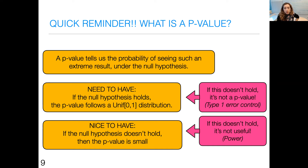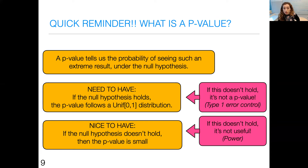A brief note: if you think you'd avoid this problem by reporting confidence intervals instead of p-values, you're wrong — the same issues apply. And if you're a Bayesian, you're still not getting out of this problem. This is a fundamental issue regardless of how we report results. We need to address the underlying double dipping, not just switch statistical frameworks.